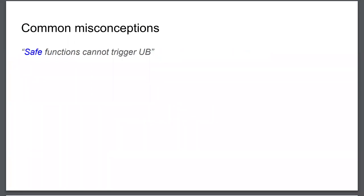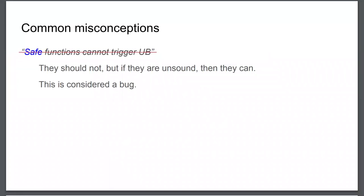A common misconception: safe functions cannot trigger undefined behavior. Normally this is true, but the condition is that there must be no soundness bug in those functions. If there is a bug — an unsound function — then UB can be triggered. It is not a formal compiler guarantee; it is a programmer responsibility to ensure correctness.